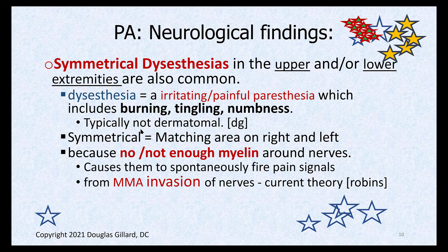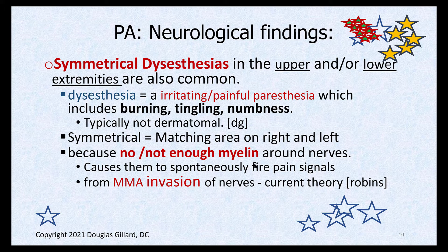The dysesthesia is typically symmetrical on right vs. left, and it can move around like neuropathic pain — for example, from the C5 dermatome in the morning to C7, then C6 and T8. This is because there's no myelin: myelin must be continuously replaced, and without vitamin B12 you can't do that. The nerves short-circuit — like exposed electrical wires. In pain fibers this causes spontaneous action potentials, sending pain signals to the brain. Methylmalonic acid (MMA) also builds up and invades nerves, contributing to this mechanism.